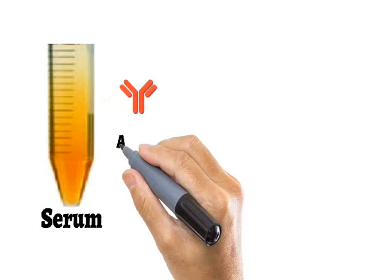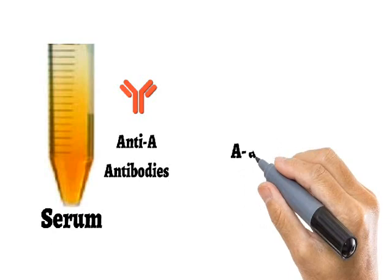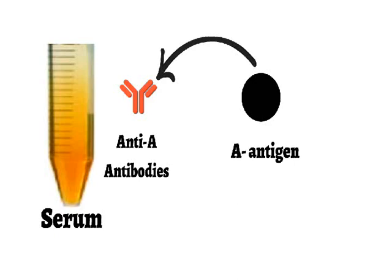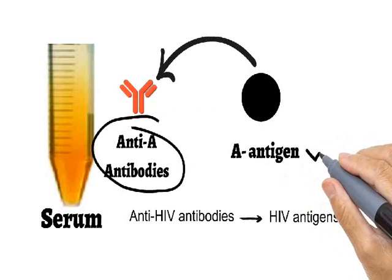Let us assume we have a serum sample and we want to check the presence and quantify anti-A antibodies in it. If we want to do this using indirect ELISA, we need some basic things. First is the A antigen itself. We need the antigen complementary to the antibody to be detected. So if you want to detect anti-HIV antibodies in the sample, you will need HIV antigen. In this case, we want to detect anti-A antibodies and therefore we are using the A antigen.